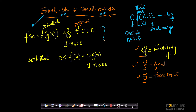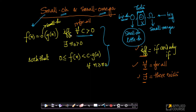Let us understand how this is different from big-O. In big-O, we said there should exist some c greater than 0. In the case of small-O, we are saying for all c greater than 0 — this is the biggest difference between big-O and small-O. In the big-O definition, there exists some c; but in small-O, this condition must hold for all c greater than 0.